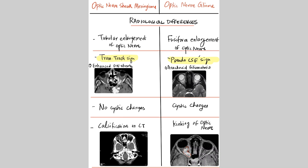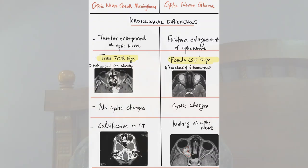Radiologically: meningiomas cause tubular enlargement of the optic nerve with the classic tram track sign, whereas gliomas cause fusiform enlargement with a pseudo-CSF sign — because of infiltration of the arachnoid membranes causing arachnoid gliomatosis. There are no cystic changes in meningiomas, but cystic changes may occur in gliomas. Calcification is seen in meningiomas, but in gliomas you see kinking or tortuosity of the optic nerve. Meningiomas grow around the sheath; gliomas enlarge the nerve itself.